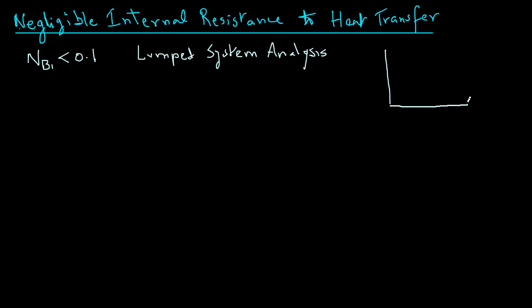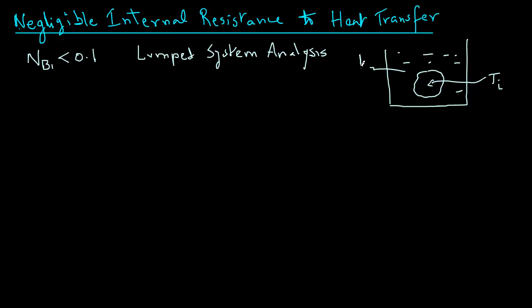Let's take an example of a solid object that is initially at temperature Ti, and we suddenly expose it to a higher temperature environment. The temperature of the environment is Ta. So we will write a heat balance to see how heat is transferring into this object under unsteady state conditions.